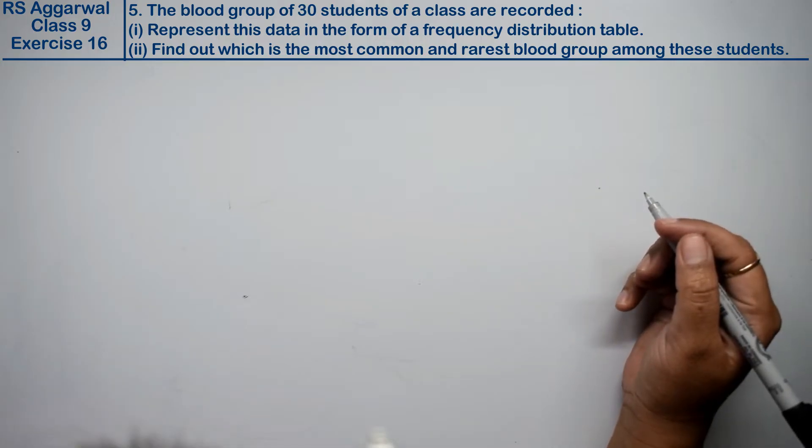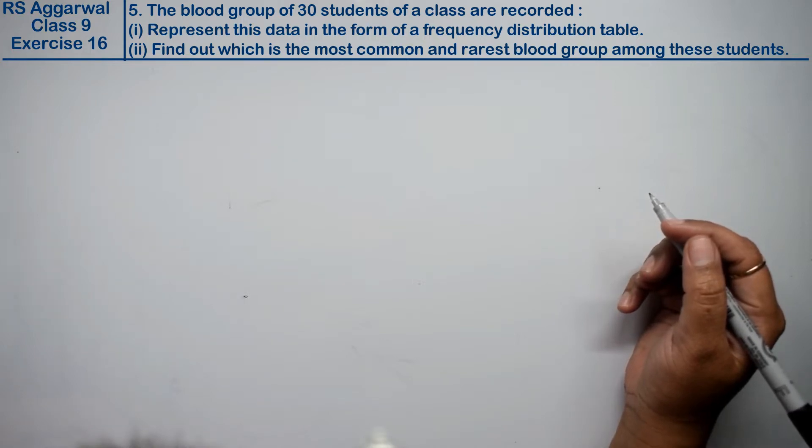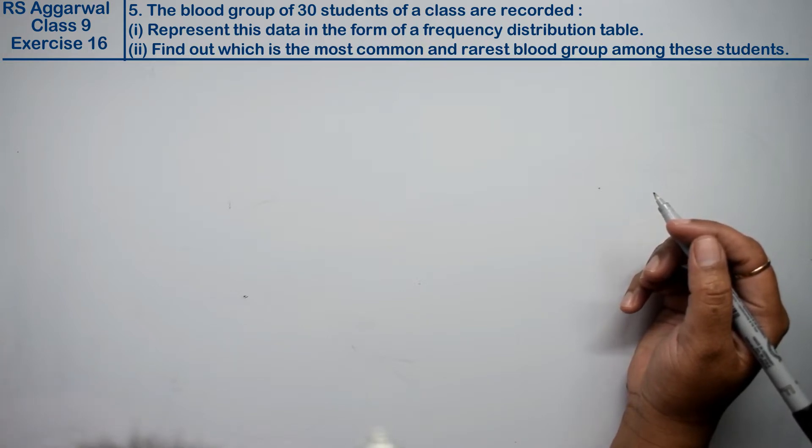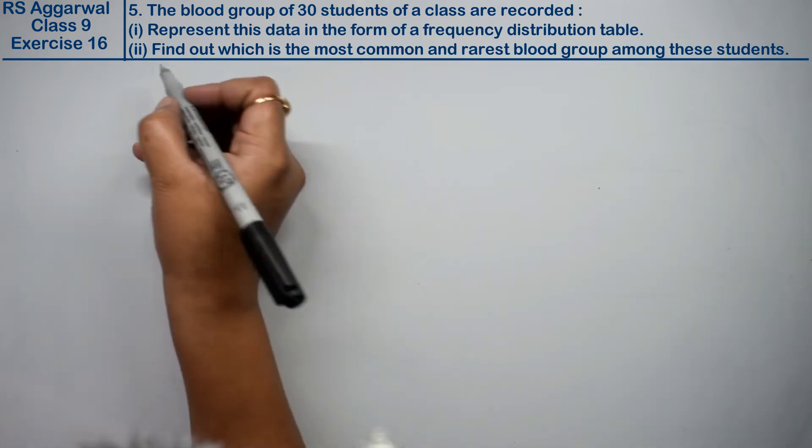Let's do question number fifth of exercise 16, presentation of data in tabular form. The blood groups of 30 students of a class are recorded. Friends, 30 students blood group records are recorded.